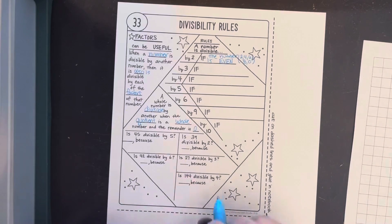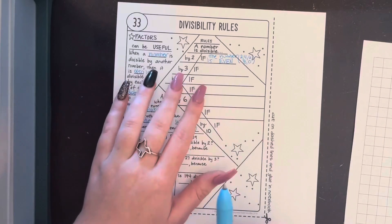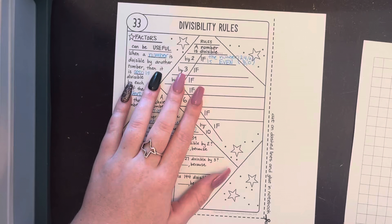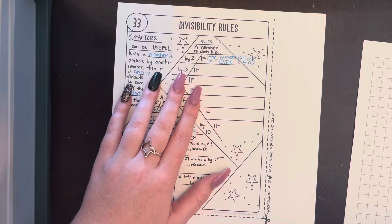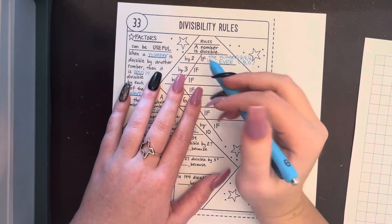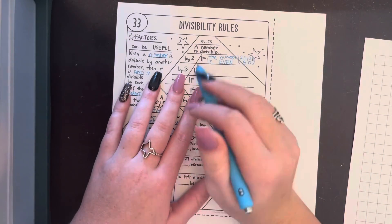Next, a number is divisible by three. Just remember, if I'm going too fast, you can pause the video and make sure you're keeping up with the notes. If you need to rewatch the video, you can do so. A number is divisible by three if the sum of its digits is divisible by three.